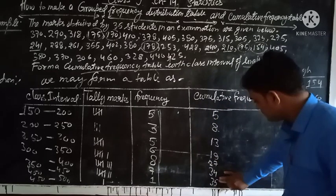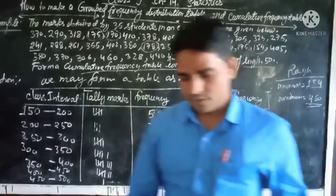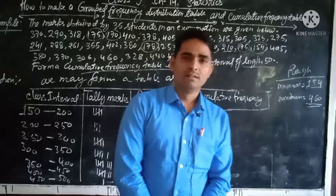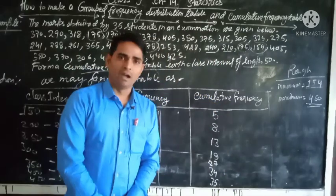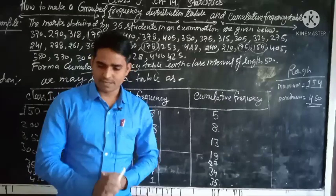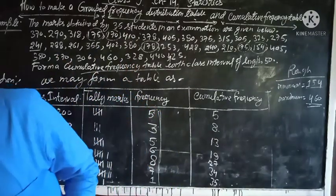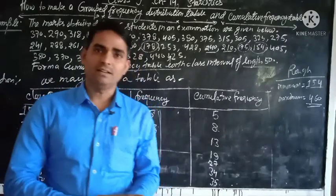So this is the cumulative frequency distribution table. I hope you understand how to make the grouped and cumulative frequency distribution table. If you understand, you can solve the questions which are given in the exercise.